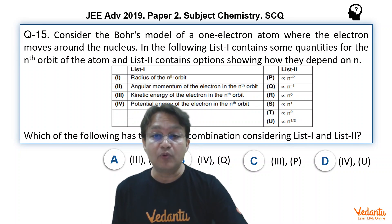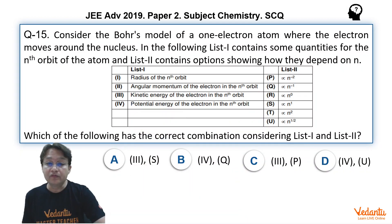Consider the Bohr's model of one electron atom where the electron moves around the nucleus. In the following list one contains some quantities for nth orbit of the atom and list two contains options showing how they depend on n.